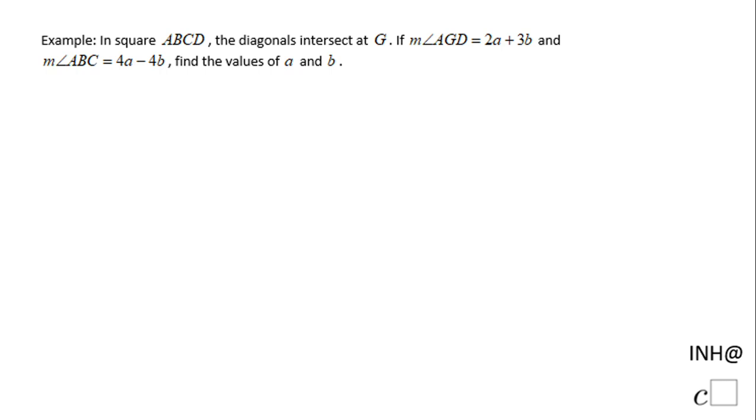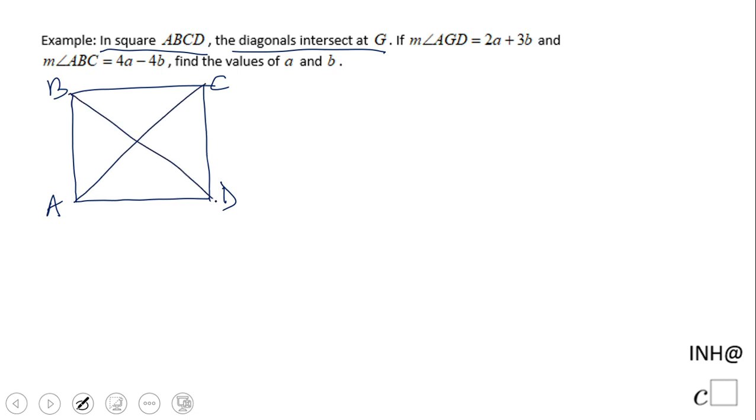Welcome back to INeedHelpWithCSquared. In this example, we're going to look at a square where the diagonals intersect at point G. Let's draw that square - this is ABCD. The diagonals AC and BD intersect right here at point G.